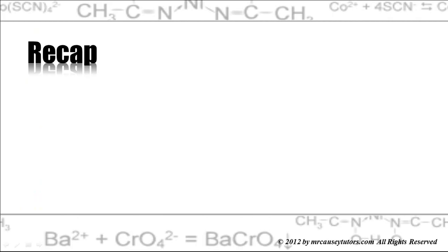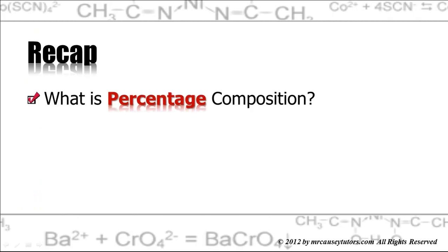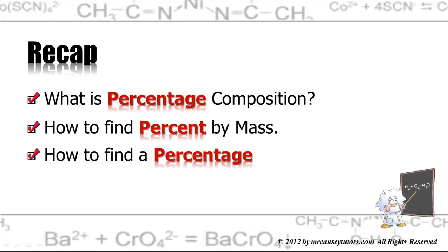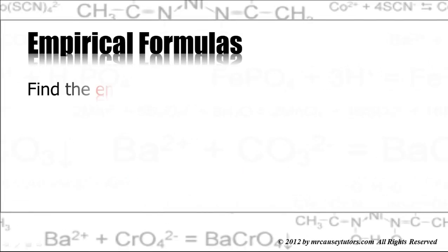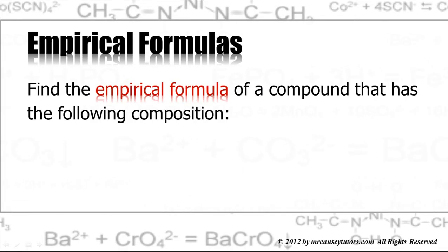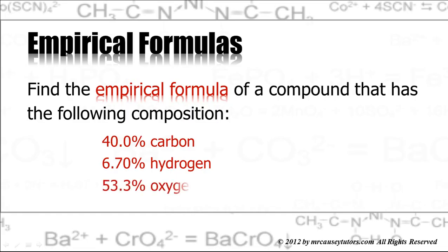Let's recap. I've told you, or answered the question, what is percentage composition? I've shown you how to find a percent by mass, and I've shown you how to find a percentage. All right, now let's go ahead and use this information to find empirical formulas and molecular formulas. Find the empirical formula of a compound that has the following composition. 40 percent carbon, 6.70 percent hydrogen, and 53.3 percent oxygen.